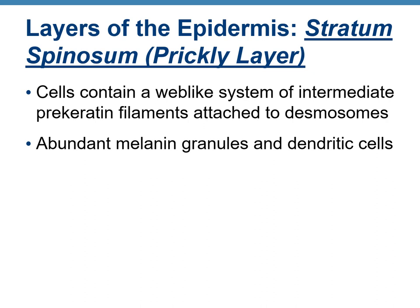The next layer is the stratum spinosum. These are cells that have become flattened and are full of the protein pre-keratin. Pre-keratin filaments are attached to desmosomes, and this stratum also contains abundant melanin granules and dendritic cells.